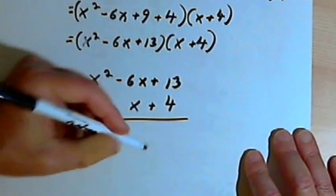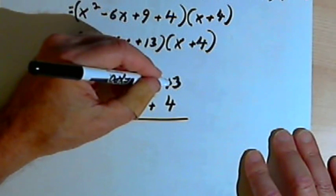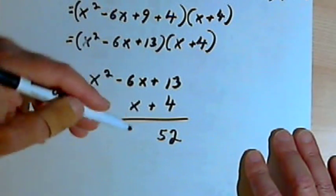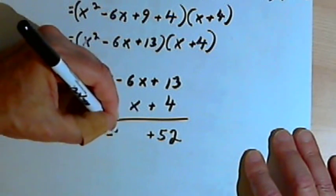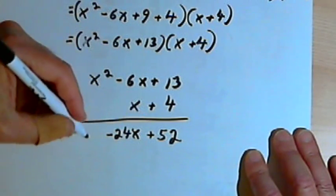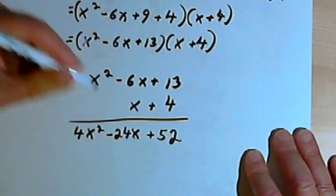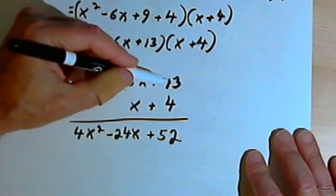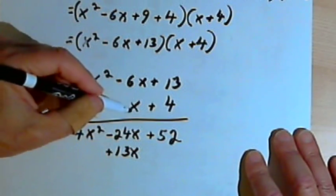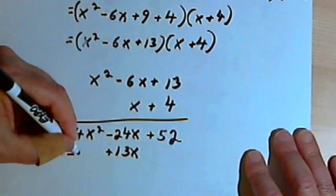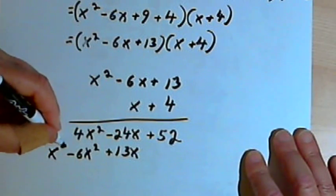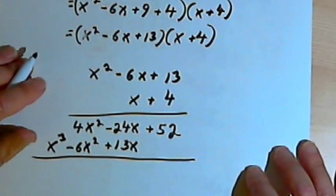So I've got 4 times 13, let's see, 2 times 13 is 26, 4 times 13 is 52. 4 times negative 6x is negative 24x. And 4 times x squared is 4x squared. Now let's multiply the x times 13, so that's 13x. That's positive. x times negative 6x is negative 6x squared. And x times x squared is x to the third.